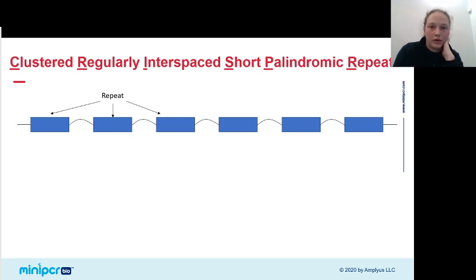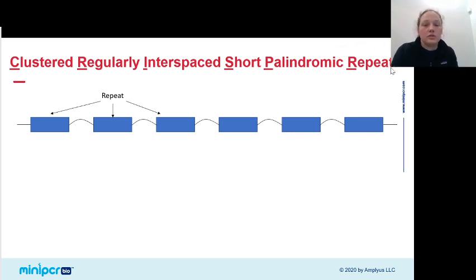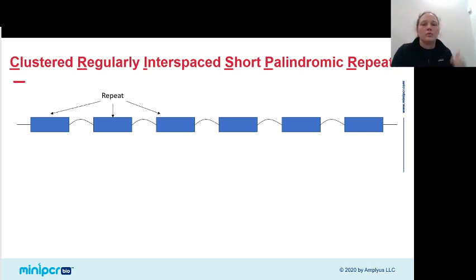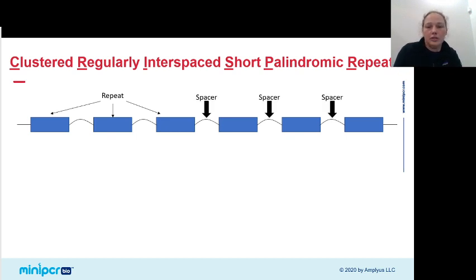I'm going to walk you through this phrase — it's actually easier to start at the end. Repeats means DNA sequences that are repeated over and over again. These repeats are short. And palindromic, which means that when one strand is read in one direction, it's the same as the other strand being read in the other direction — the five prime to three prime sequence is the same on both strands. And then these repeats are clustered, meaning they're near each other, but regularly interspaced, meaning they're not right next to each other. There's some random sequence in between them, and that random sequence is called a spacer.